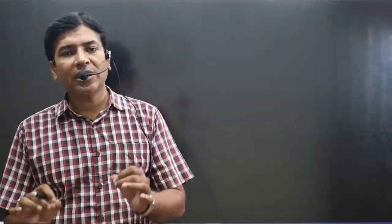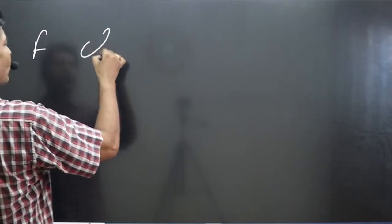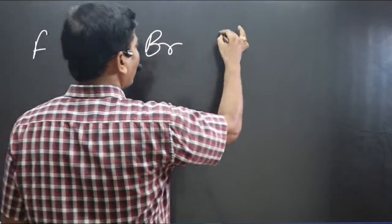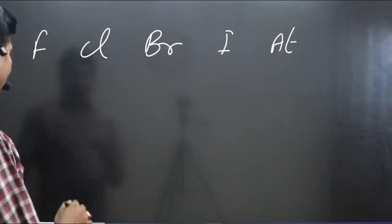You might have learned halogens are colorful by nature, but how can we remember these colors? Pay attention very carefully. We have halogens: fluorine, chlorine, bromine, iodine, and astatine. Remember a small sentence.